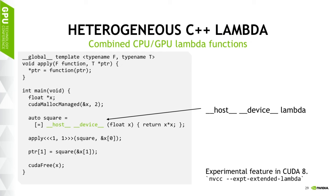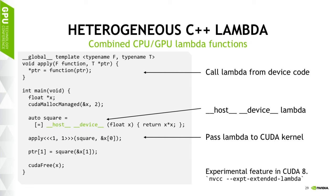In CUDA 8, we're extending that with host-device Lambdas, so you can define a Lambda that can be compiled and run on either the GPU or the CPU. This may look like a small thing, but it's not easy to do — it is an experimental feature enabled with the NVCC flag --experimental-relaxed-constexpr, or rather the extended lambda flag. In this example we define the Lambda, pass it to a CUDA kernel called apply which applies that template function, and we can also call it from host code using the variable name square.